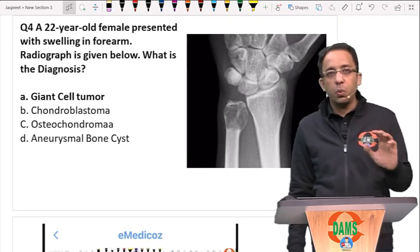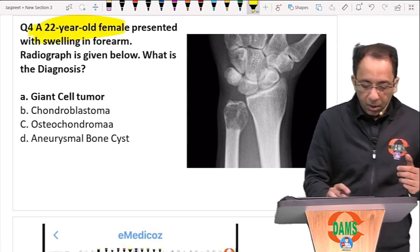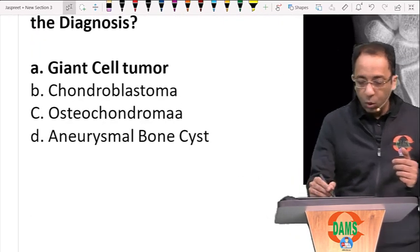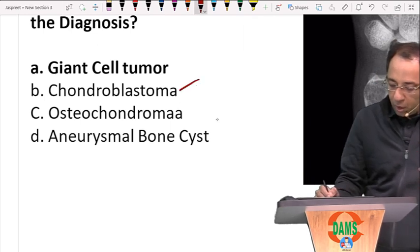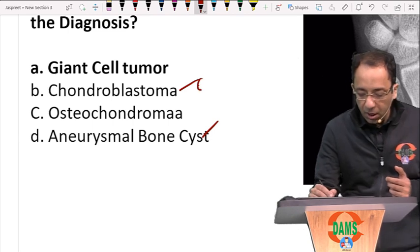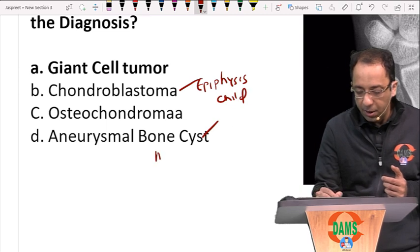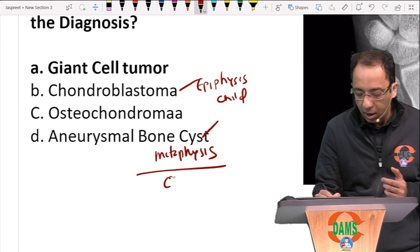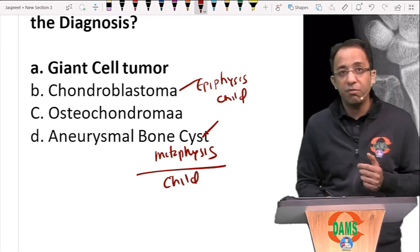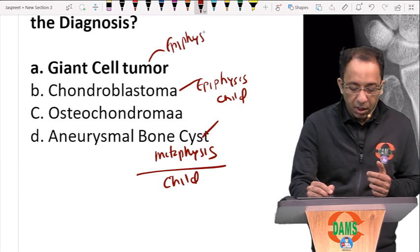Next question: the patient has swelling in the forearm and is 22 years old. Chondroblastoma and aneurysmal bone cysts (ABC) are pediatric tumors. Chondroblastoma is seen in the epiphysis of children; ABC is an expansile metaphyseal lesion in children before growth plates have fused. Giant cell tumor (GCT) is seen in the epiphysis of adults.